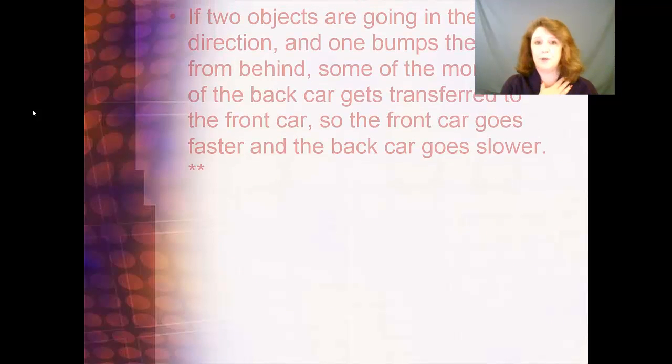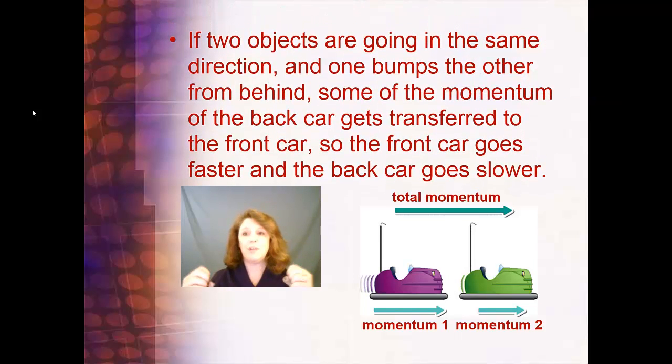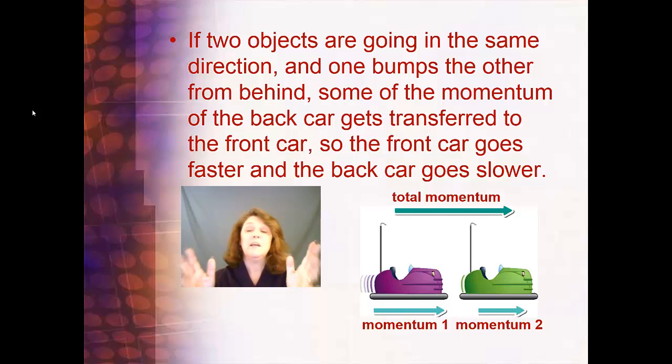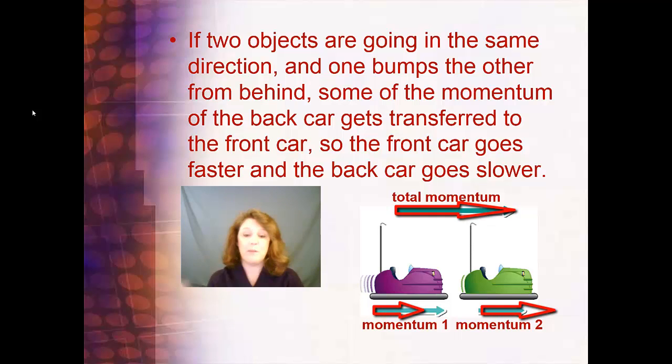And we're going to look at bumper cars. If two objects are going in the same direction, and one bumps the other from behind, some of the momentum from the back car gets transferred to the front car. So, this guy ends up pushing this one faster, the energy goes here, he has less energy, so now he's going to go slower. And you can see that with the arrows, the total momentum equals the momentum of one car plus the momentum of the other car. And the green car is going to have more, and the purple car is going to have less, but when you add them together, they end up with the total. The total doesn't change.